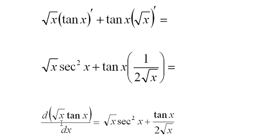So the derivative of the square root of x times the tangent x equals the square root of x times secant squared x plus the tangent x over two times the square root of x.